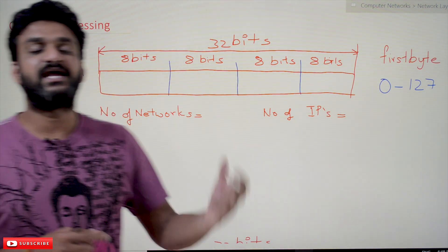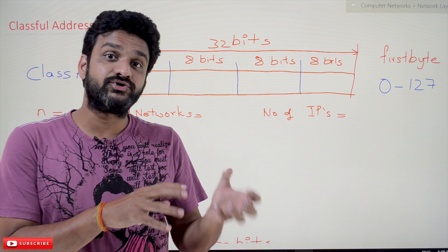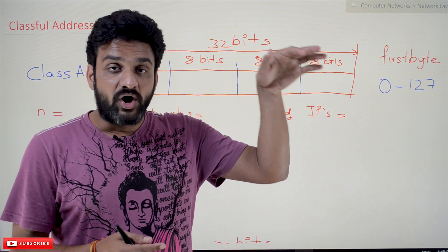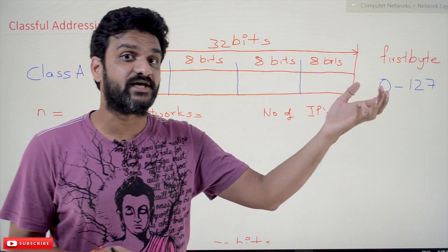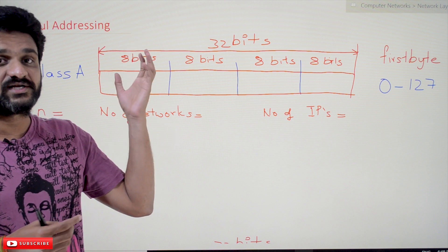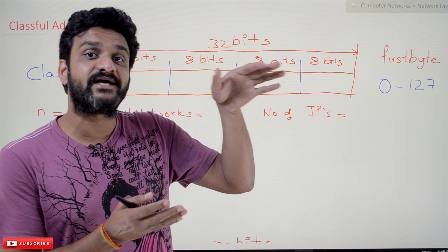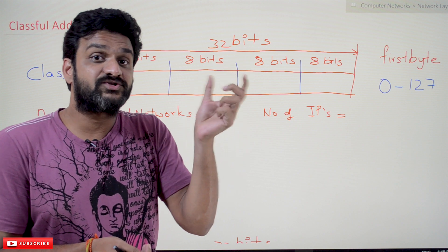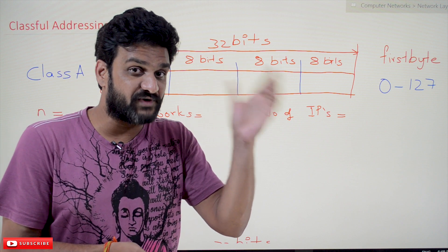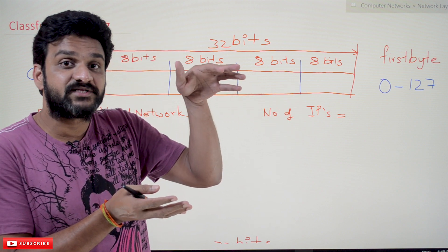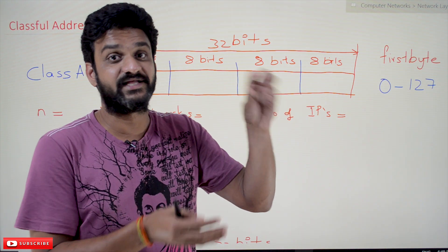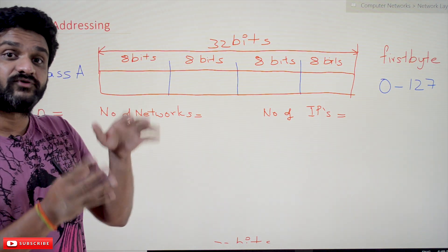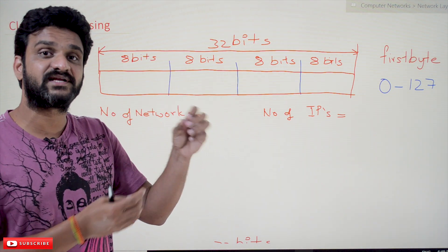Now coming to this class — we'll try to understand classful addressing. What is classful addressing? It is an efficient mechanism to utilize the available IP addresses. We have 2^32 IP addresses, and all those addresses need to be efficiently utilized. Classful addressing divides the entire set of IP addresses into classes based upon the prefix bits. There are five classes: Class A, Class B, Class C, Class D, and Class E.